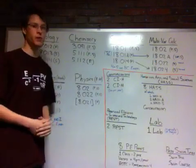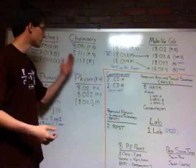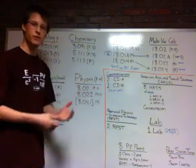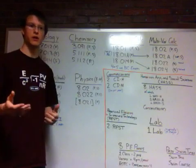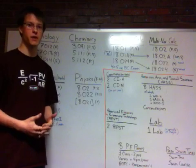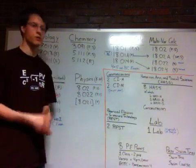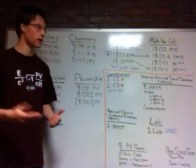The chemistry requirement can be fulfilled by three classes, any one of these three: 3091, 5111, or 5112. 3091 is an introduction to solid state chemistry. It's in the Department of Materials Science and has a heavier emphasis on solid state chemistry, so crystals, band gaps, things like that.